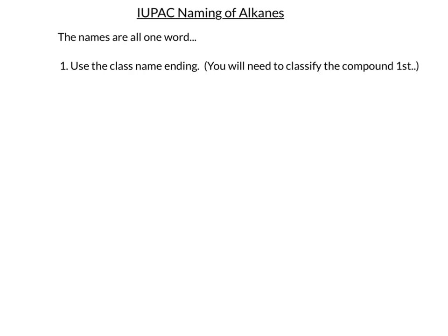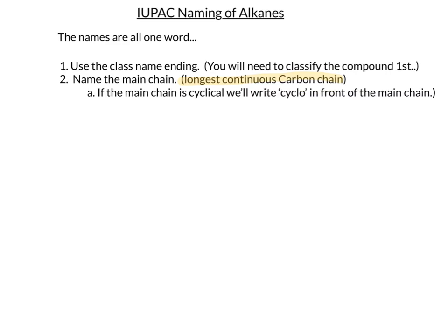The next step is finding the main chain — you want to find the main chain that includes any important functional groups. We have no functional groups, so we won't be including them. We want to find the longest continuous carbon chain. I like to highlight the main chain so that I can easily see any substituents attached to it. If the main chain is cyclical, we'll write the prefix cyclo just in front of the main chain's name. Next, we'll write down all of the substituents and identify them by name.